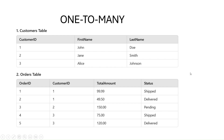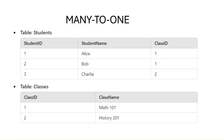The customer ID in the orders table is a foreign key referencing the customers table. From the customers table perspective, a customer can have multiple orders. From the orders table perspective, multiple orders can belong to one customer.